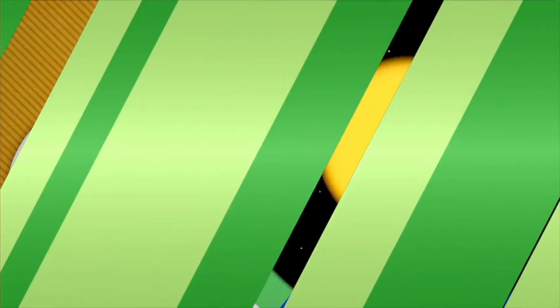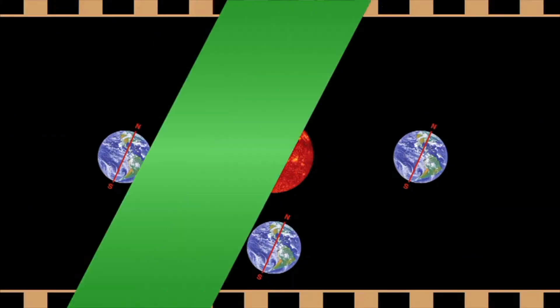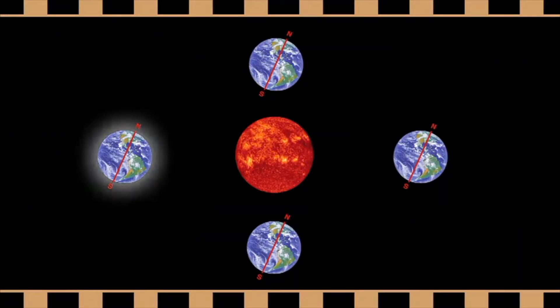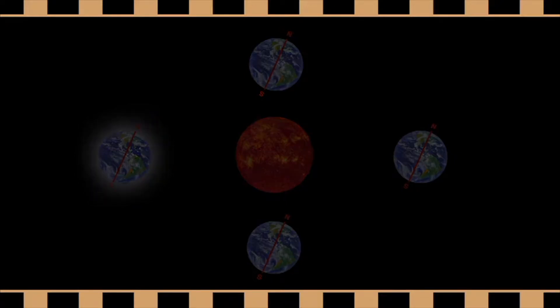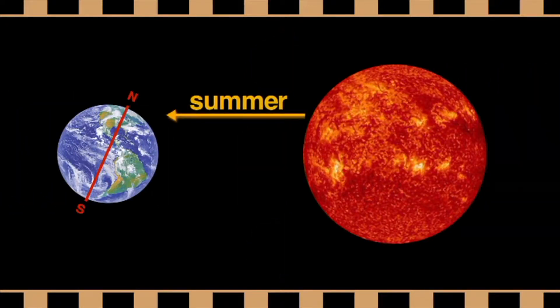Remember that the Earth is slightly tilted on its axis. The revolution of the Earth and the tilt and rotation of the Earth on its axis is what causes changes in seasons. When the Earth is tilted with the Northern Hemisphere towards the sun, it is summer in the Northern Hemisphere and winter in the Southern Hemisphere.